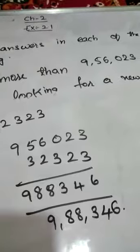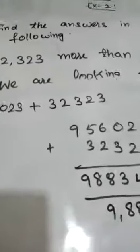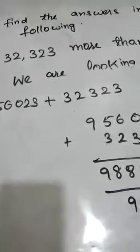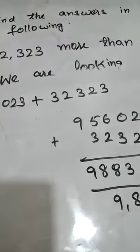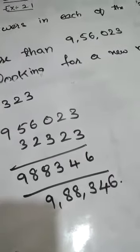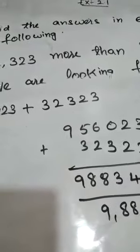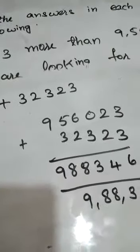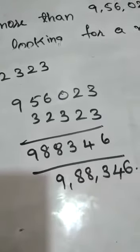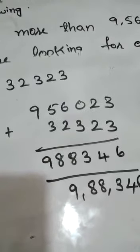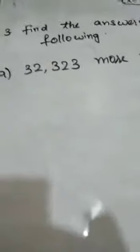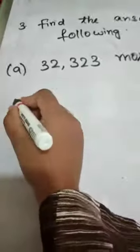Okay, so this is the way to solve this. What they have asked: 32,323 more than 9,56,023. So more than is nothing but we have to add these both numbers. So we have added and we got the result.